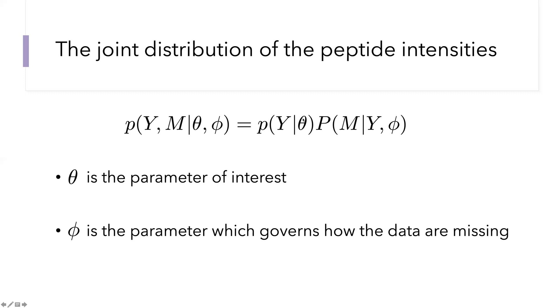As before, we can factor this in terms of the parameter theta, which tells us everything we need to know about the distribution of peptide intensities across all peptides. And a missingness mechanism, which gives us the probability model for which peptides are missing, given the complete matrix of peptide intensities and some parameters phi that tell us exactly how those values are missing.